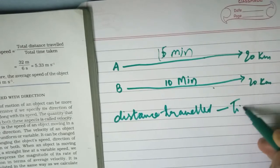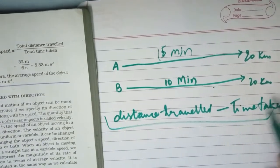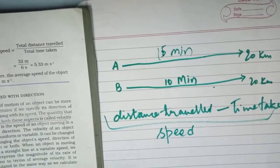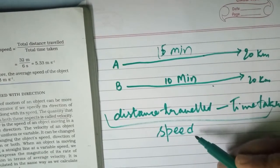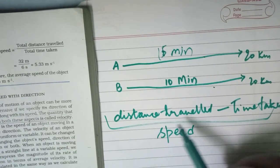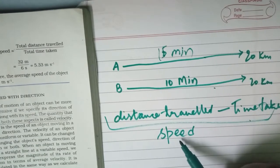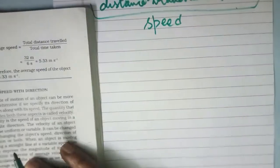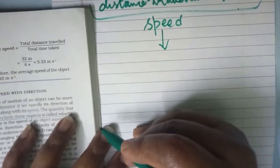So this vehicle may be slow and this may be faster, or it can be vice versa. The measure of how much distance an object covers in a given period of time, we call it speed. Speed is one physical quantity we need to know whenever we are talking about the motion of an object.